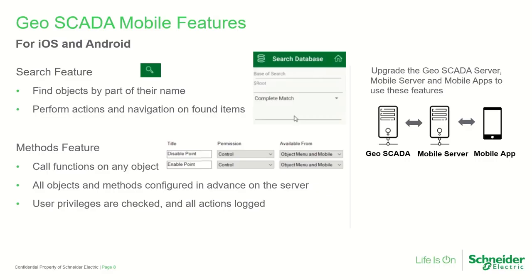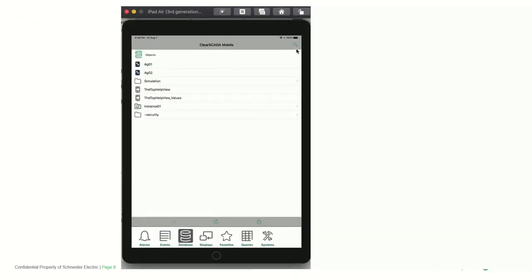Our next main feature is features for GeoScada Mobile. This is both for iOS and Android platforms and we've added two new sub-features. One is a search — you can find objects in the GeoScada database by part of their name and you can perform actions and navigate on items that you've found. The second is the methods feature where you can call functions on an object, for example to cause a refresh of data gathered to an RTU, or to enable or disable points. Everything is configured server side.